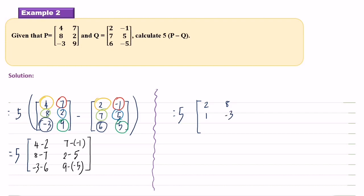Okay, so 4 minus 2 is 2, 7 plus 1 is 8, 8 minus 7 is 1, 2 minus 5 is negative 3, negative 3 minus negative 6 is 3, 9 plus 5 is 14. Last step, all the elements in the bracket multiplied by 5. 5 times 2 is 10, 5 times 8 is 40, 5 times 1 is 5, 5 times negative 3 is negative 15, 5 times negative 9 is negative 45, and 5 times 14 equals 70.